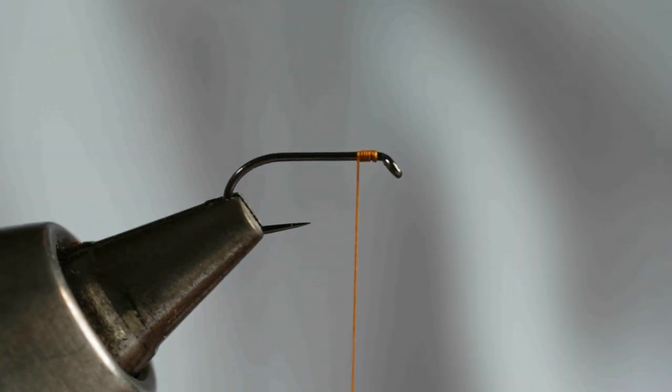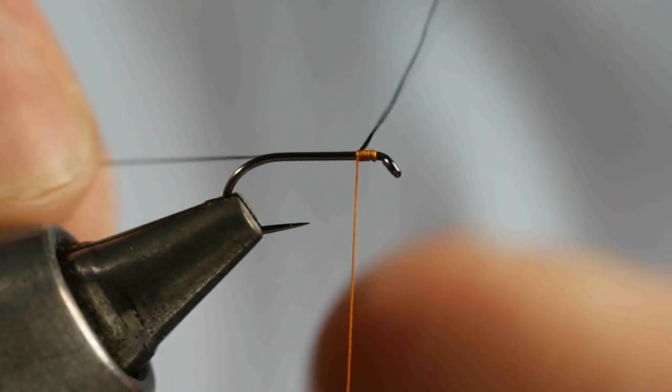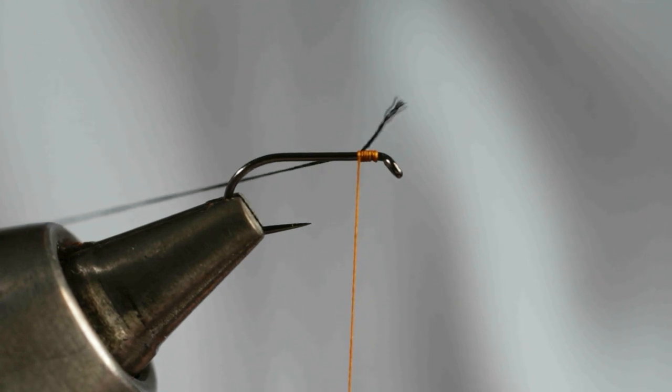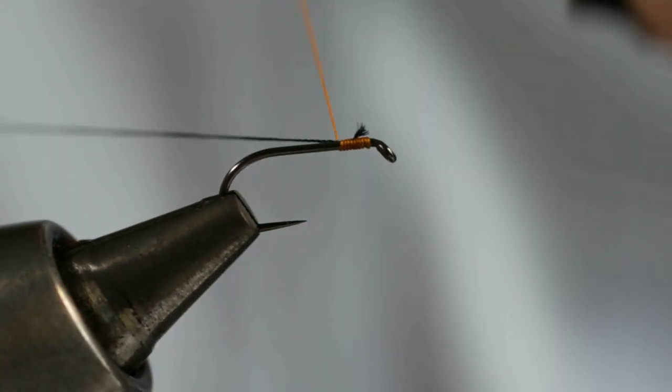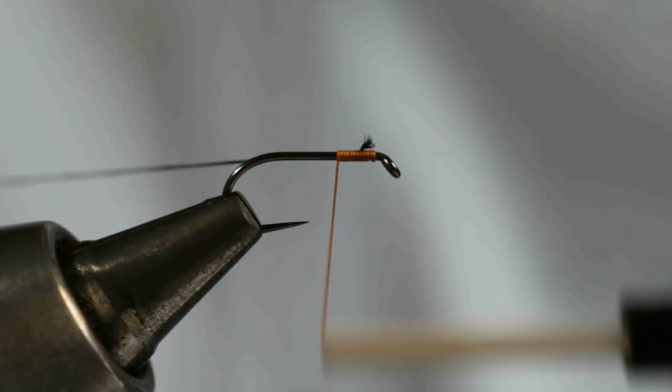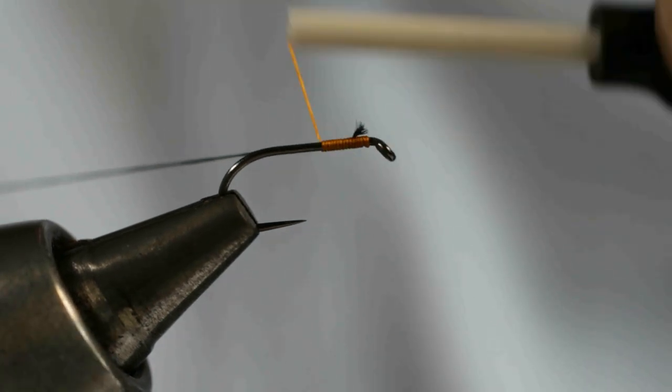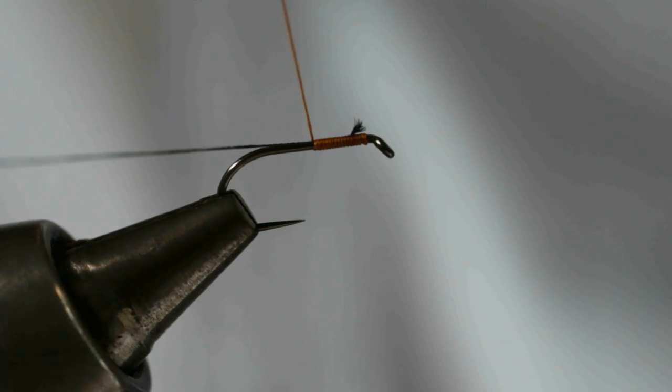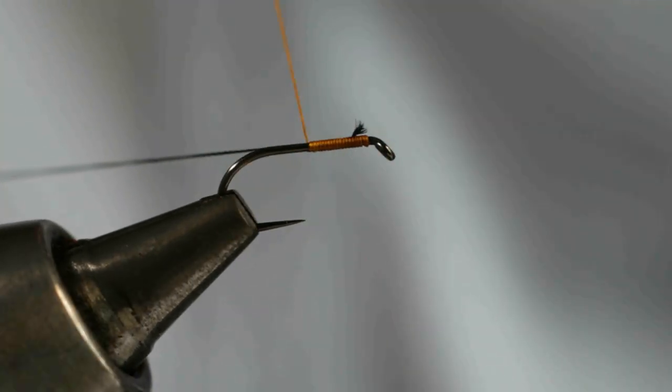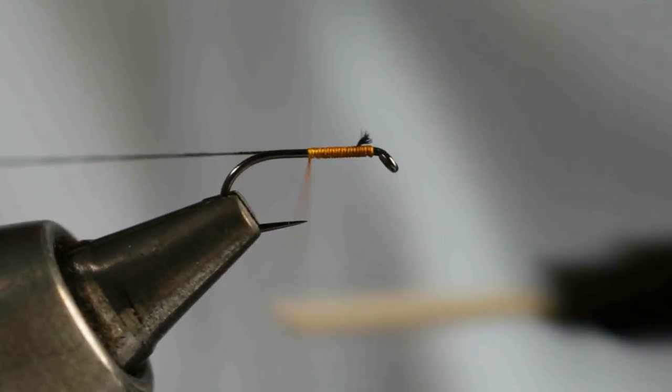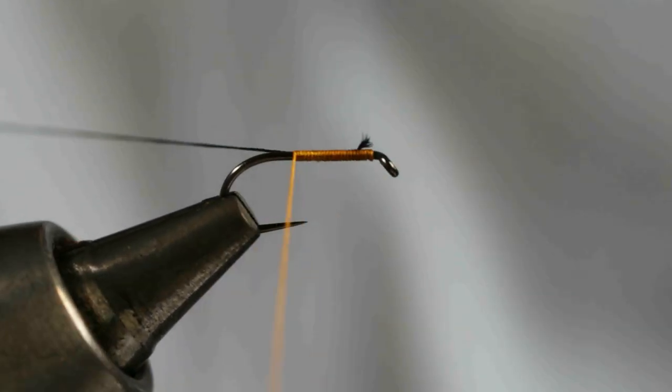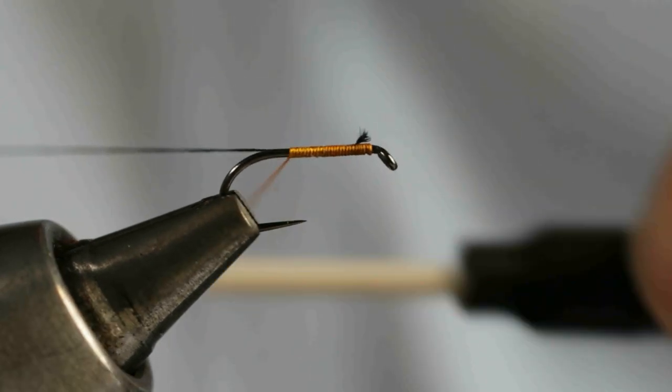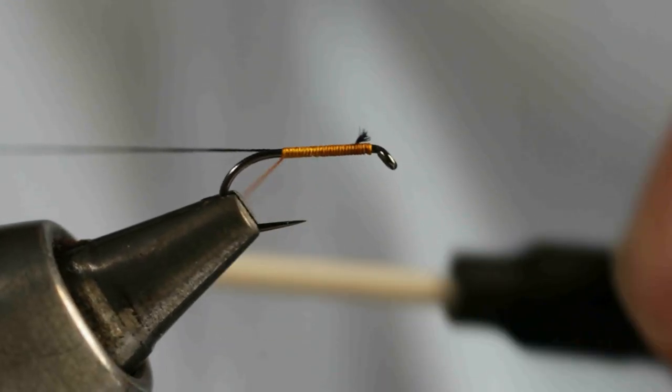Just catch it in with the silk, pull it so there's hardly any silk showing, and then use your silk, keep it taut, and then you use it to form your body. So I'm coming down in tight touching turns and because I've kept that black silk rib quite taut it's ensuring that each preceding turn of silk will be tight up to the next.